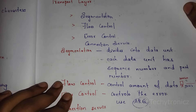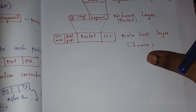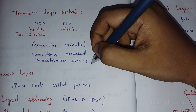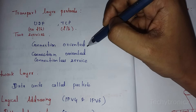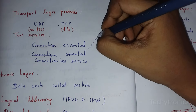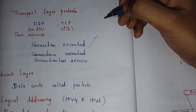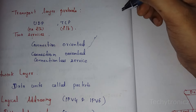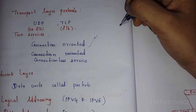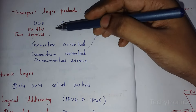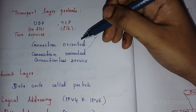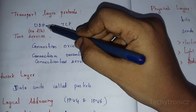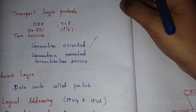The transport layer also has connection services: connection-oriented and connectionless services. TCP uses connection-oriented service — a connection request is made, the server sends acknowledgement, and then data transfer occurs. UDP uses connectionless service. So the transport layer has two main protocols: UDP (User Datagram Protocol) and TCP (Transmission Control Protocol).